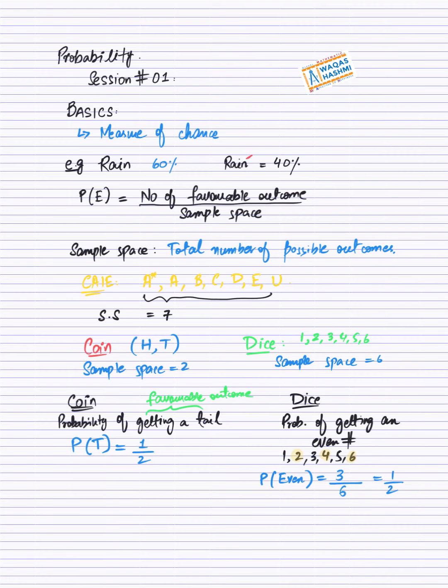Ab jahan se humne class start kari thi, aapke grades kya the. Kya probability hai, ke aapka grade jo hai, wo A star hai, inshallah. Ab agar aapka grade A star hai, toh A star aane ka chance kitna hai bhai, in sub me? A star ka chance hai, aapke paas one. Out of possible outcomes kitne, possible outcomes aapke paas the seven. Toh ye answer aayega, aapke paas one over seven.